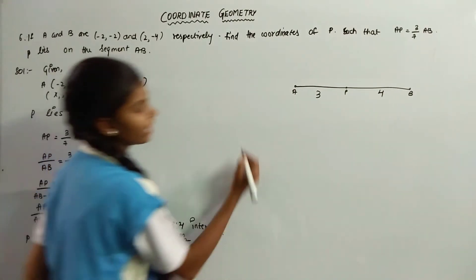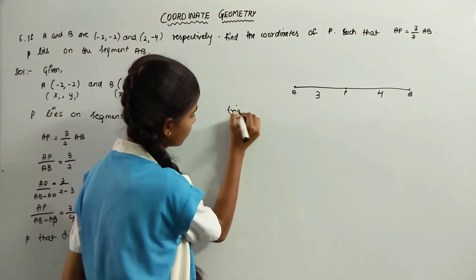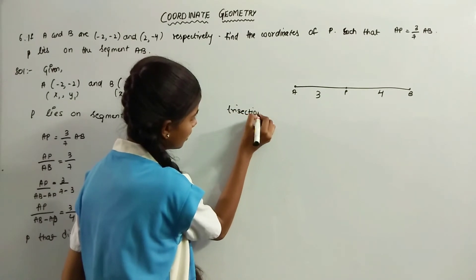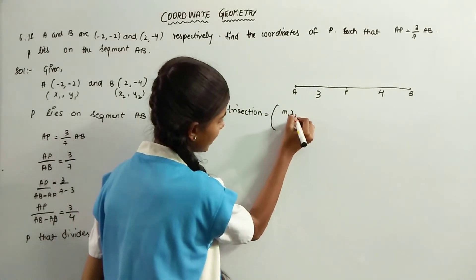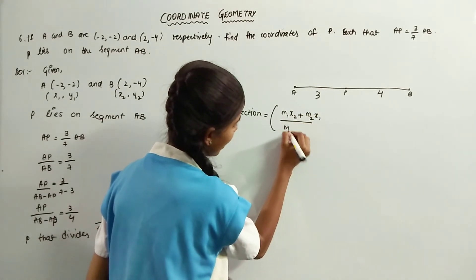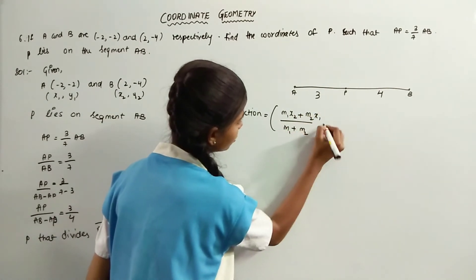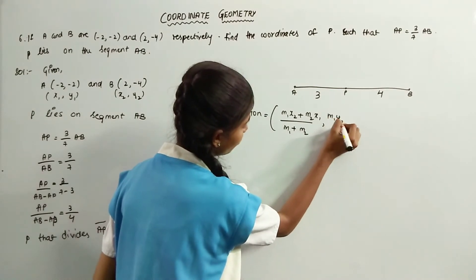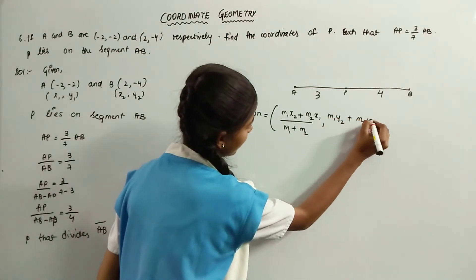By section formula, P is equal to M1 x2 plus M2 x1 by M1 plus M2 comma M1 y2 plus M2 y1 by M1 plus M2.